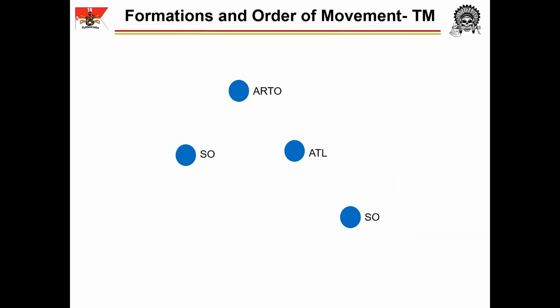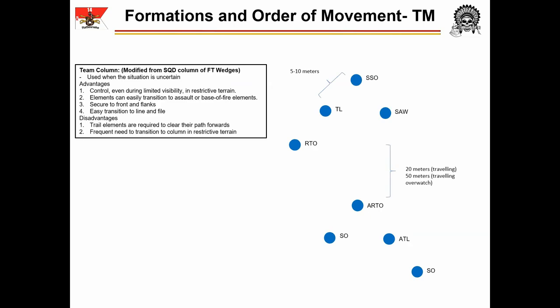The rear wedge is composed of the ARTO, ATL, and both SOs. The ATL is second from the rear to allow him to control the wedge while maintaining accountability of his entire team. In a situation in which the wedge is employed, counter-tracking will play a reduced role, if any. Additionally, the horizontal footprint of the team is larger than the ATL would be able to cover himself. Thus, the ATL does not need to be the final member of the team as he would be in a file.